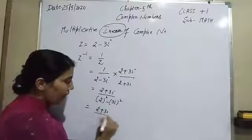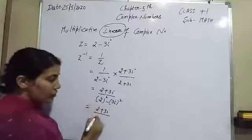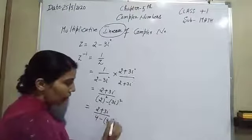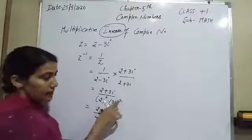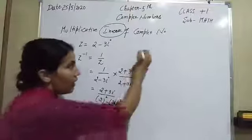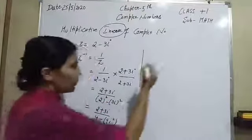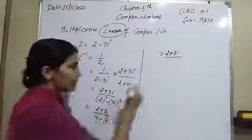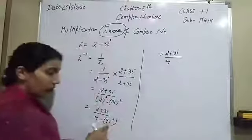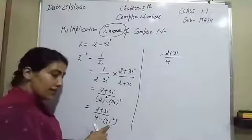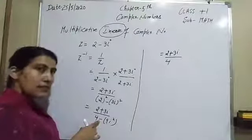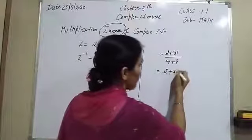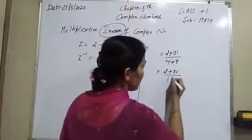So we have 2 plus 3 eta in the numerator, and in the denominator: 2 squared is 4, minus 3 squared is 9, along with eta squared. Now everyone knows the value of eta squared is minus 1, so it becomes minus minus, plus 9. So the denominator is 9 plus 4, that is 13.